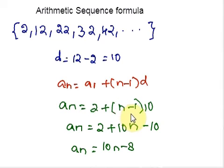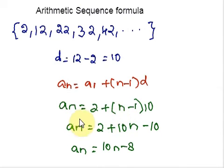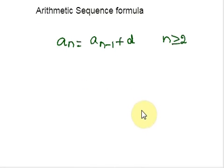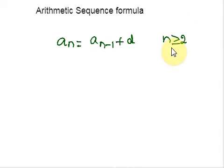Some arithmetic sequences are defined in terms of the previous term using a recursive formula. The formula provides an algebraic rule for determining the terms of the sequence. A recursive formula allows us to find any term of an arithmetic sequence. We use a recursive formula to find the missing term using a function of the preceding term. Each term is the sum of the previous term and the common difference. The recursive formula for an arithmetic sequence with common difference D is: An equals A(n−1) plus D, where n is greater than or equal to 2.